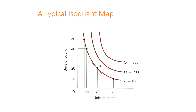Moving up to the right on the isoquant map, the firm can reach Q2 and double production. However, in order for the firm to do that, they need to increase both units of capital and units of labor. If only capital is increased, units of labor must decrease, and if only labor is increased, units of capital will go down. It must be a gradual increase in both factors to reach Q2, which is currently unattainable for the firm unless they add more units of both labor and capital.